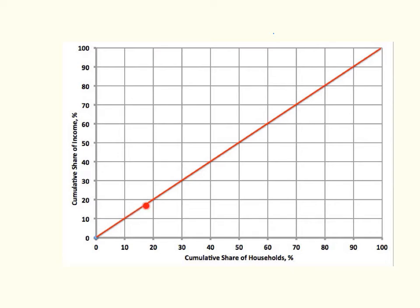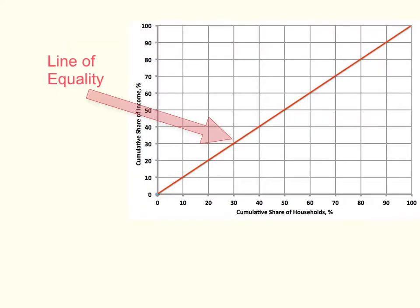Here we have a red line, which we call the line of equality. At every point along this line, the percentage of income is the same as the percentage of households — so 30% of income corresponds to 30% of households, and 60% of income corresponds to 60% of households. If the economy were actually at this line throughout, we would see a perfect distribution of income, where each household would have the same amount of income.